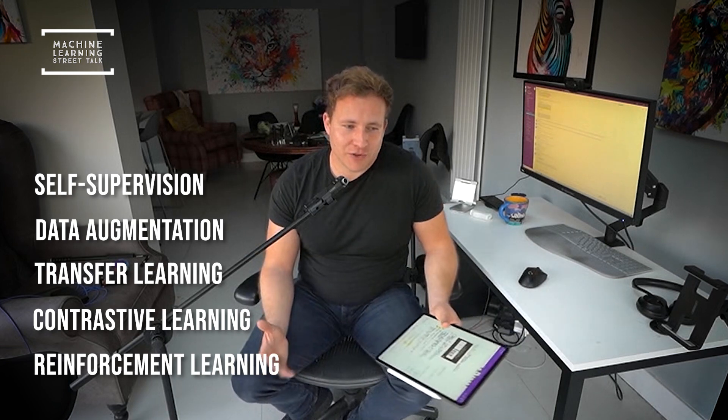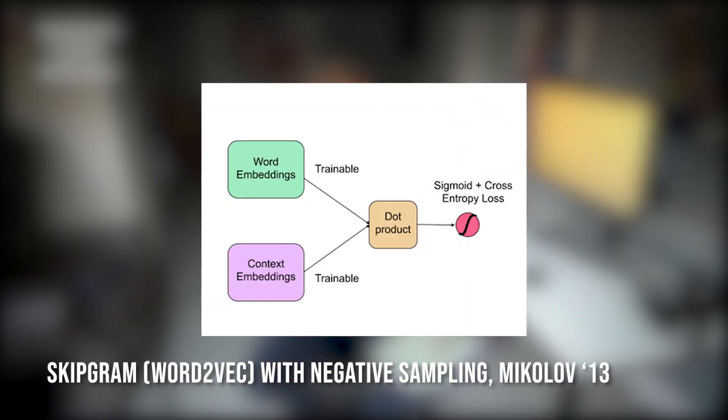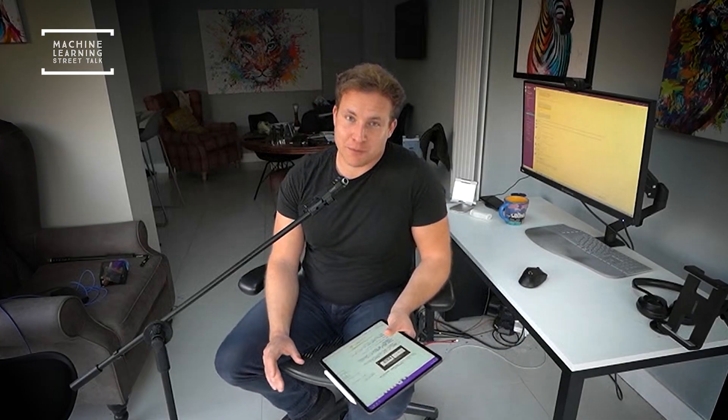The first time I came across contrastive learning was the Skip-gram model by Mikolov in 2013. The first version of his algorithm had a softmax or hierarchical softmax output space across the entire vocabulary, trying to predict the next word in a sequence. The clever trick he used to improve computational performance was a contrastive output with negative sampling — a positive sample would be two words in context of each other, and a negative sample would be a word paired with a random word from the corpus.